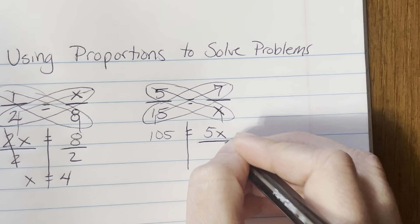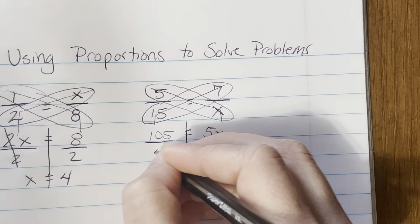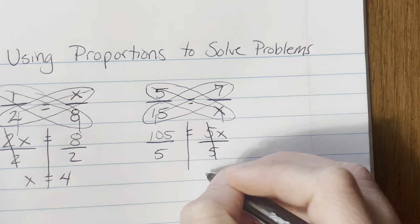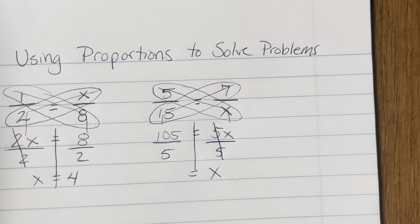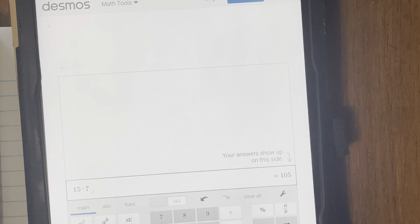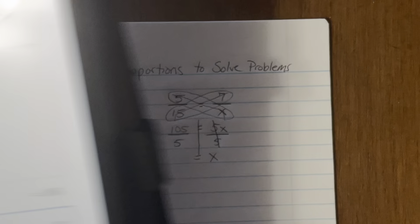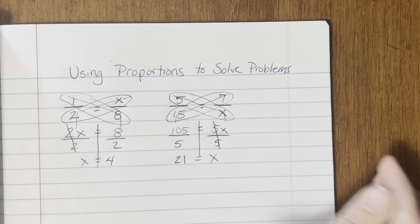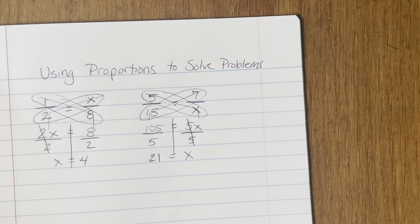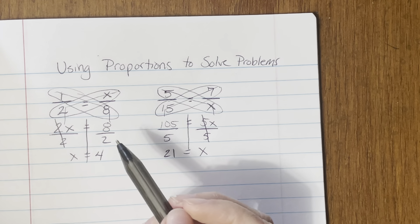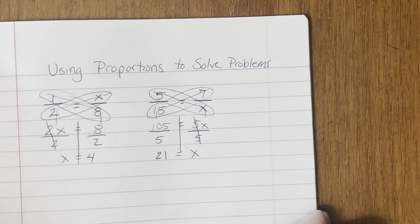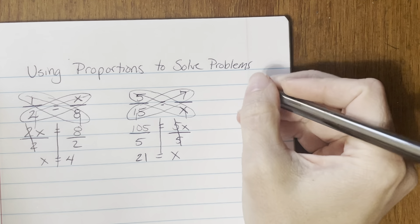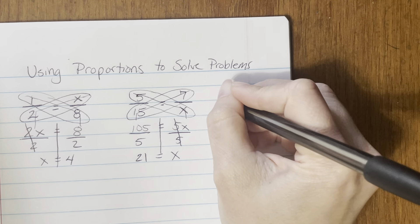So 7 times 15 equals 105, and that equals 5 times X on the other side. This is a one-step equation — draw your line down the center. It's always multiplication, so I always use division to solve. Dividing both sides by 5, the fives cancel. X equals 105 divided by 5, which in Desmos gives me 21. The missing number is 21.